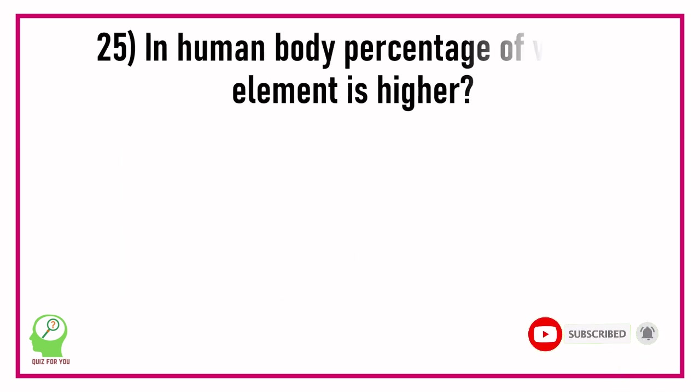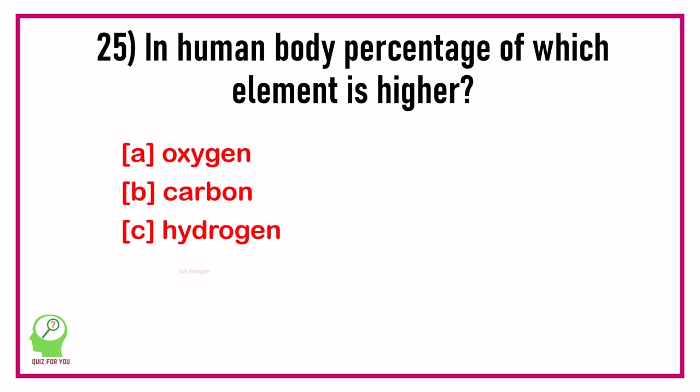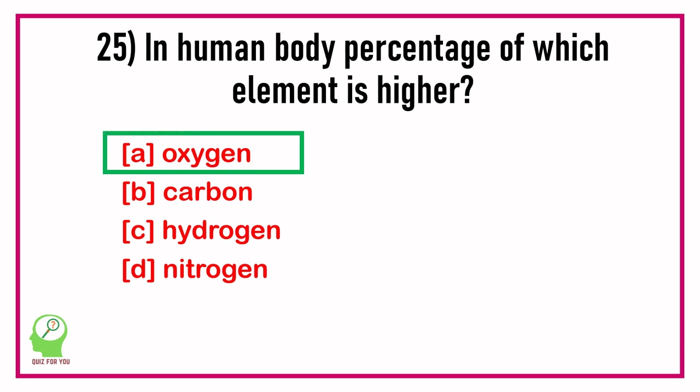Question number twenty-five: In the human body, the percentage of which element is highest? Options are: Oxygen, Carbon, Hydrogen, Nitrogen. Answer: Oxygen.